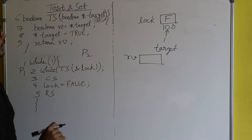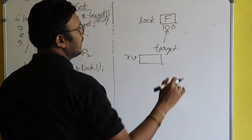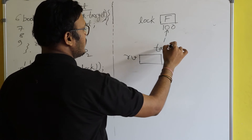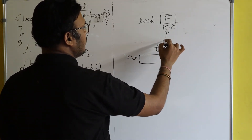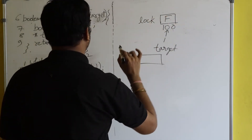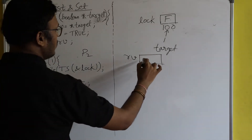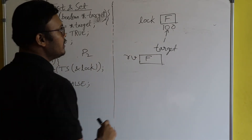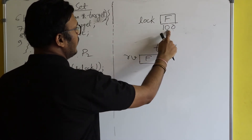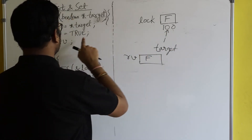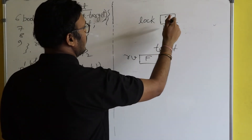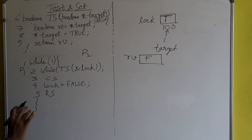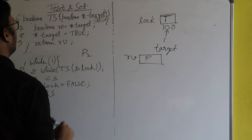Boolean rv = *target. The value of target is 100, so *target dereferences that address — the value stored at address 100 is false. So rv will contain false. Then *target = true, meaning inside that memory location the value is now set to true — so lock has become true. Then return rv.